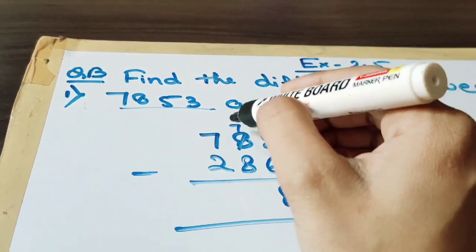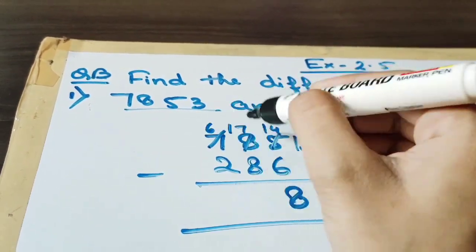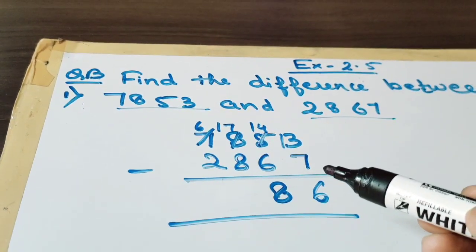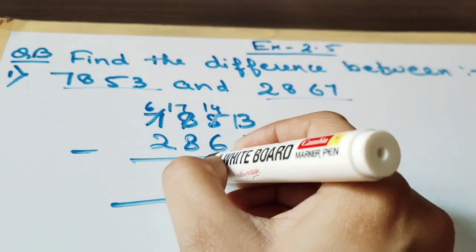Now this is 7. It is not possible to subtract. So this will be now 6 and this is 17. 17 minus 8 is 9.